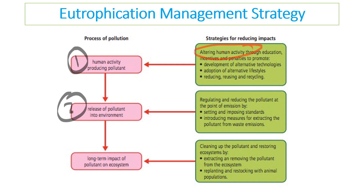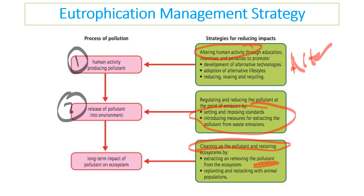To alter human activity, we can use alternative technologies that don't add pollution, adopt alternative lifestyles using less fertilizer and fewer pesticides, and reduce, recycle, and reuse. We can regulate by setting standards in countries and measuring pollution levels. Once the impact is reduced, we clean up the pollution — for example, removing eutrophication from affected areas — and then replant and restock biodiversity to restore a healthier environment. The three stages are: alter human activity, regulate the pollution, and restore the habitat.